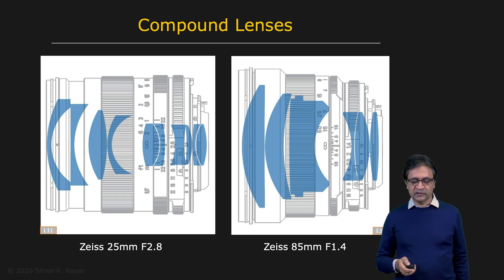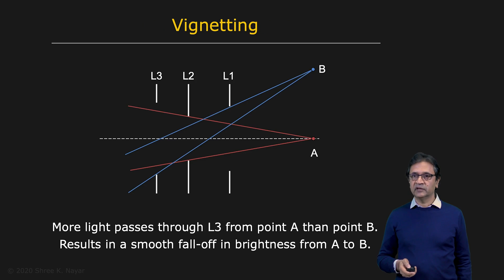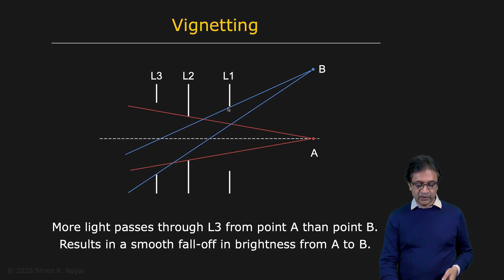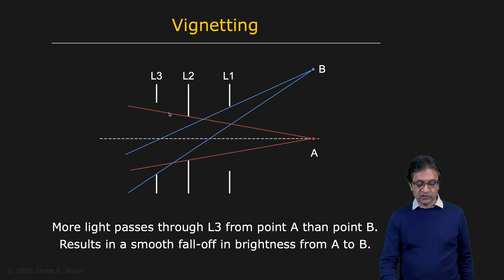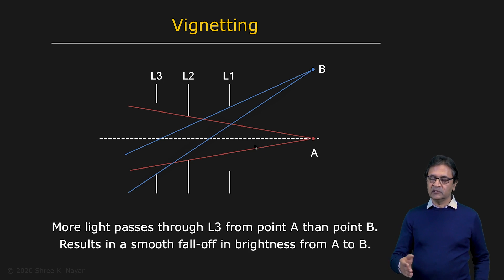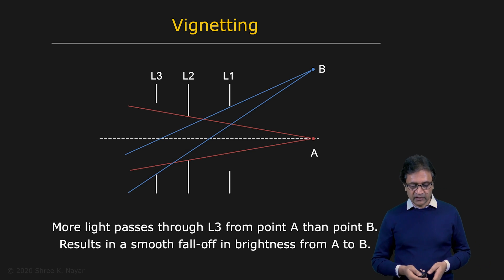Let's take a look at some of the undesirable effects that lenses suffer from. One is vignetting. Here you have lenses L1, L2, and L3, all with different sizes or openings. When you place a point on the optical axis, a lot of the light from this point manages to make its way through to the image sensor. However, if you move this point away from the optical axis along the same plane of focus, there is a greater chance that rays of light will be blocked by the lenses. The solid angle is smaller, and as a result, images often tend to be darker towards the periphery — this effect is called vignetting.